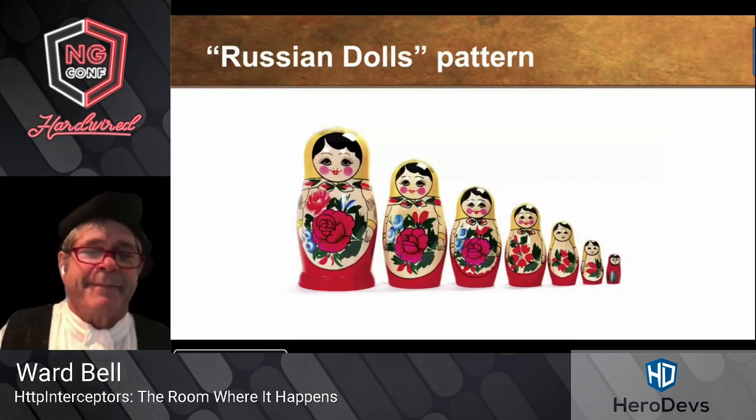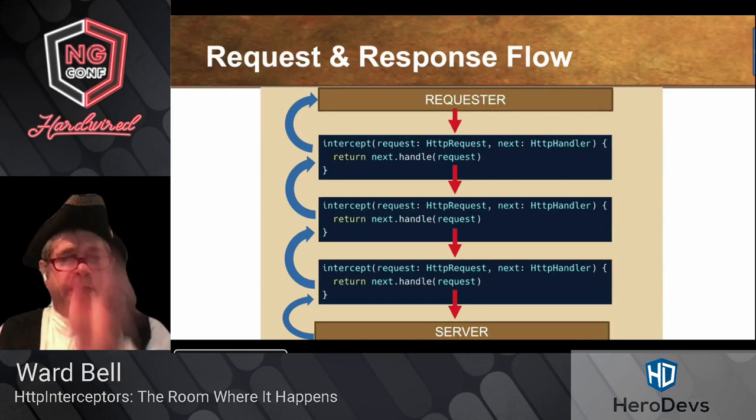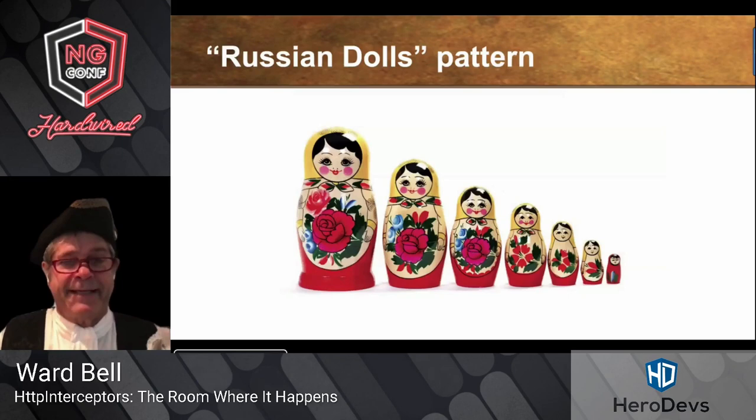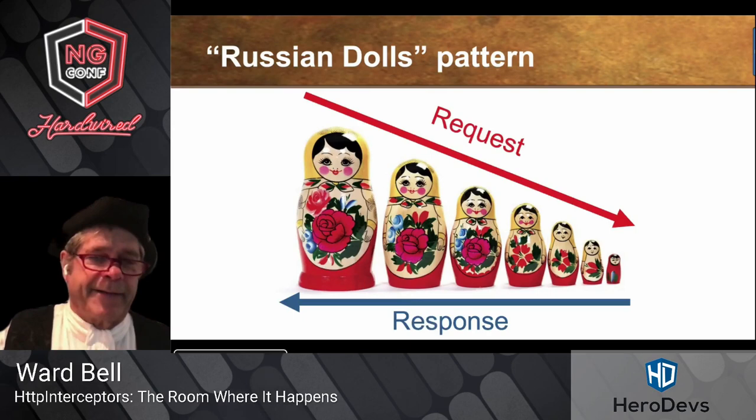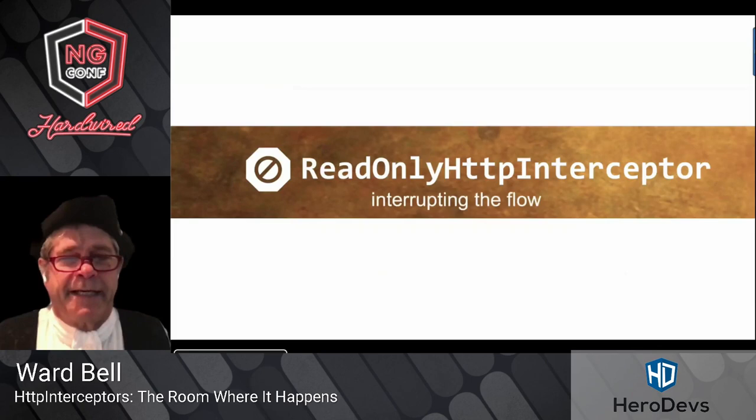This is sometimes known as the Russian doll pattern, because each of the interceptors handles both the request stream going down and the response coming back up. It's like stacked dolls, one inside the other — all requests flow down one way, and all responses bubble back up the other way.